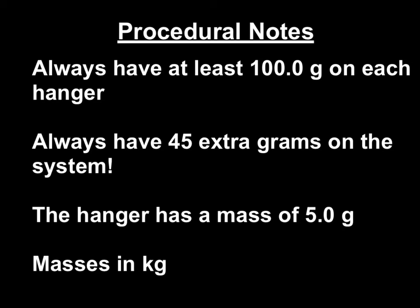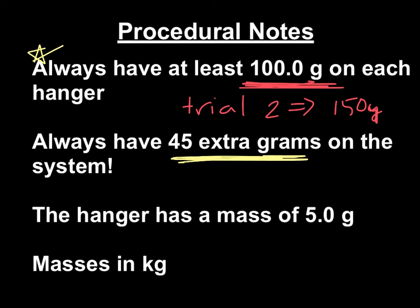So let's talk about a couple of procedural notes. Always have at least 100 grams on the hanger. For trial two, when you're collecting more points, this goes to 150 grams on each hanger. Second, in addition to the minimum that you have on each hanger, you have 45 extra grams on the system that's being accelerated. Also, your mass hanger has a mass of 5 grams. Your hangers are also being accelerated. And then make sure to convert all these masses into kilograms.